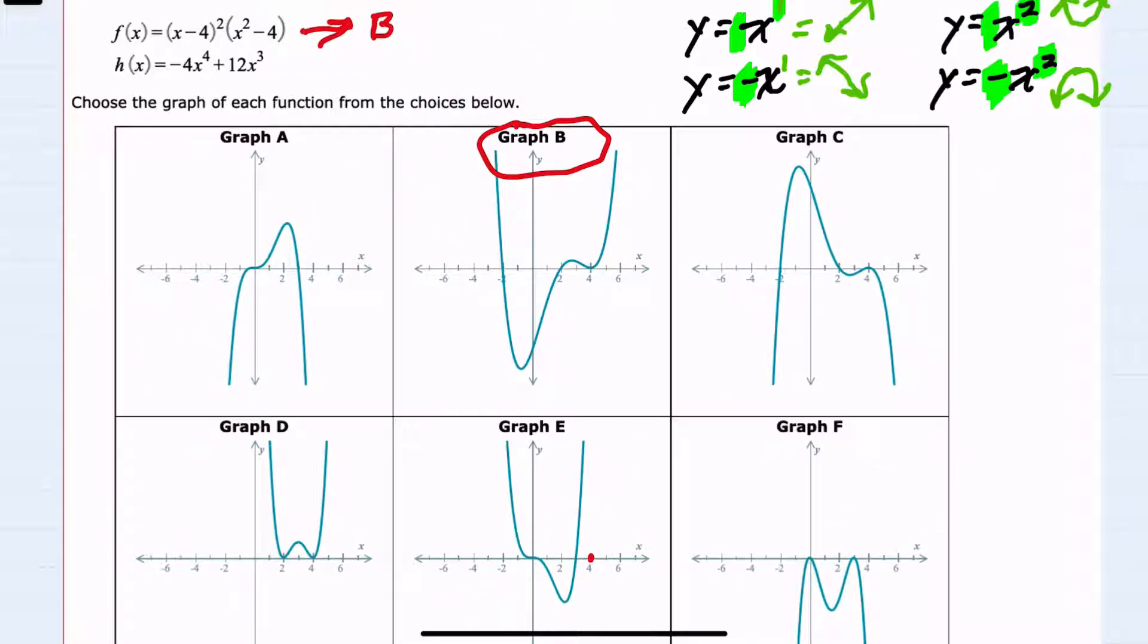For the second, h of x, I can again look at the end behavior. And here my leading term has a negative coefficient and even degree. Negative coefficient and even degree means that it is going to be going down to the left, down to the right. So I can eliminate down to the left, down to the right gives us A, C, or F. And I would again need to turn to my zeros.